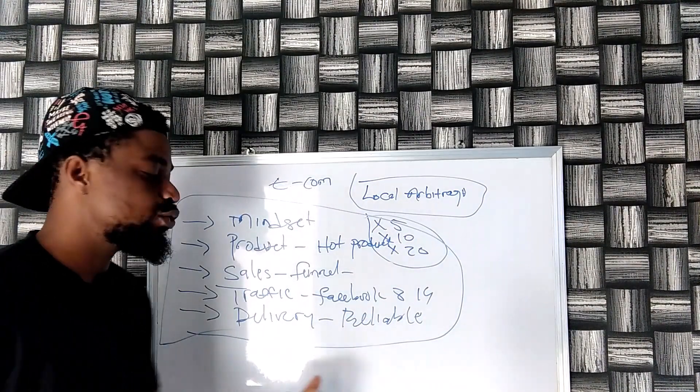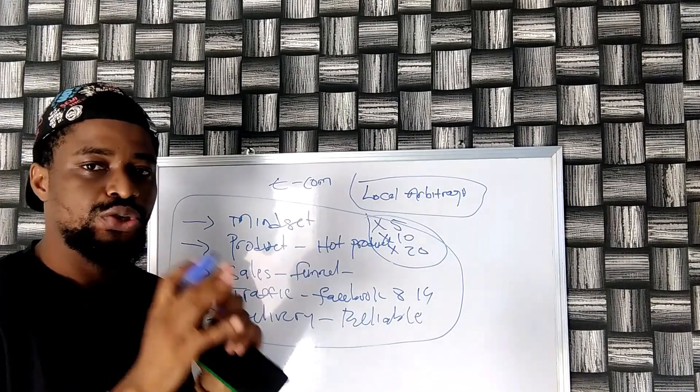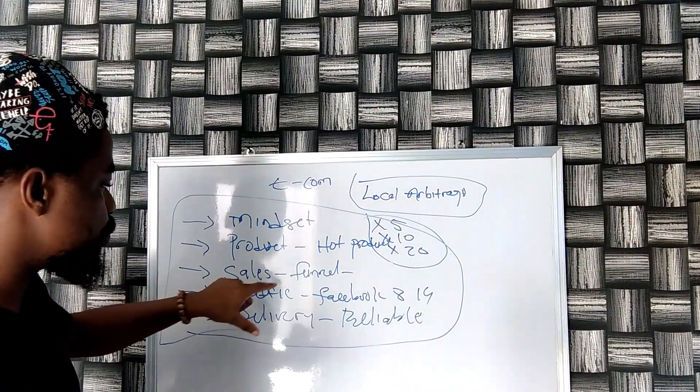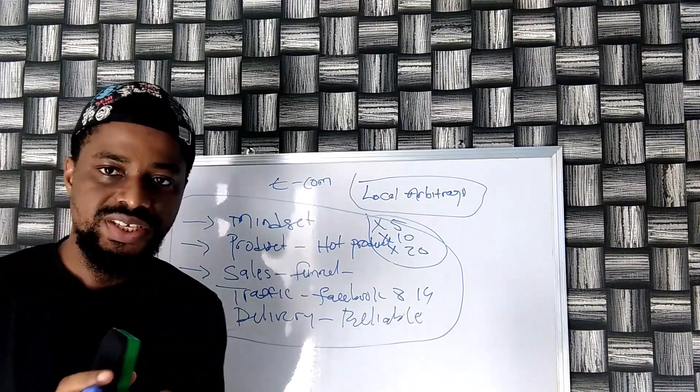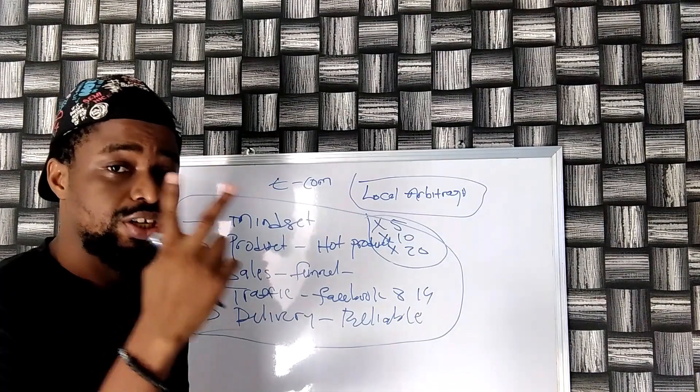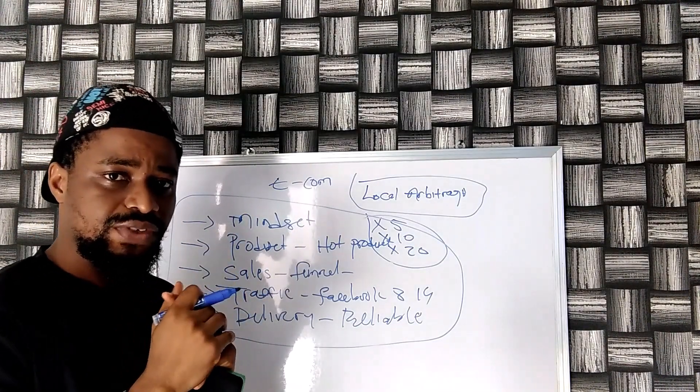So these are the five things that you must have. These are the five things that you must have in place for you to do e-commerce profitably. And I want to apply all these things together for you and show you exactly how we were able to sell 48 products in just two days. And then I created another video.